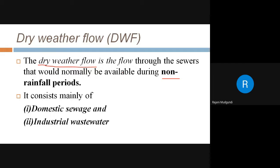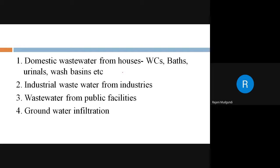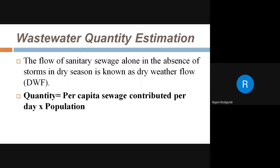No rainfall is mixed with the sewage in dry weather flow — only the wastewater is there. This consists of domestic sewage and industrial wastewater. Dry weather flow is the quantity of wastewater that flows through a sewer in dry weather when no storm water is present — sometimes called sanitary sewage. It comes from sources such as domestic wastewater, certain industries, public facilities, and groundwater infiltration.